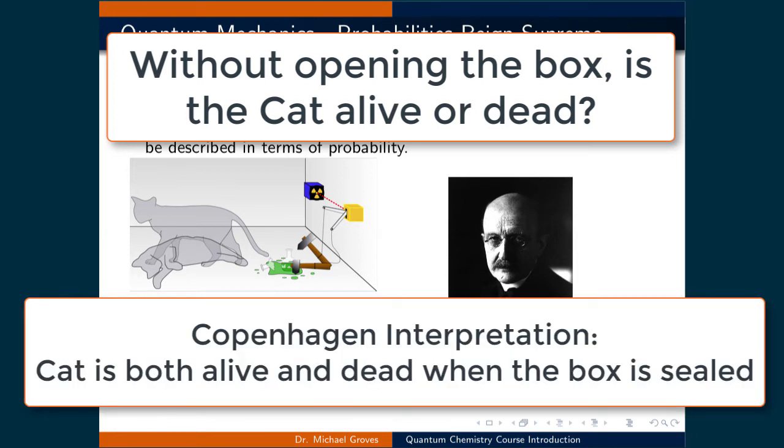In fact, according to the most common interpretation of quantum mechanics, being the Copenhagen interpretation, the cat in this box is both alive and dead. And when the box is opened to directly observe whether the cat still lives, that is the moment that the system chooses which state the cat is in.